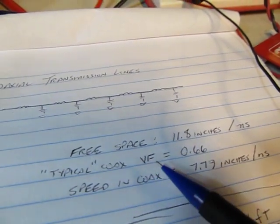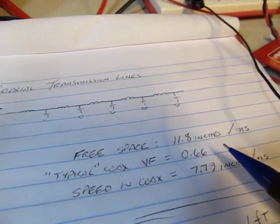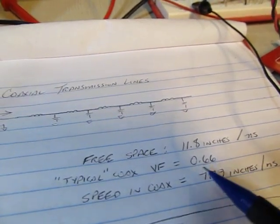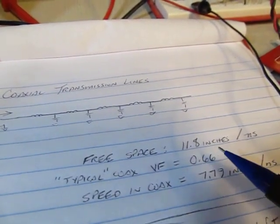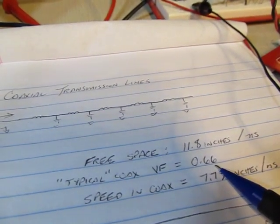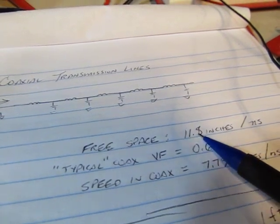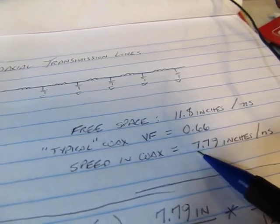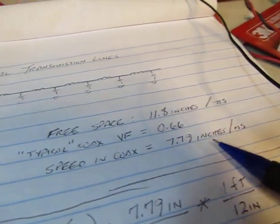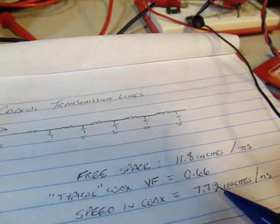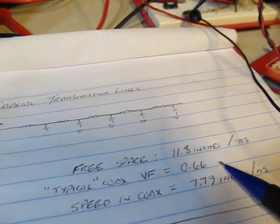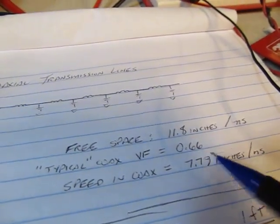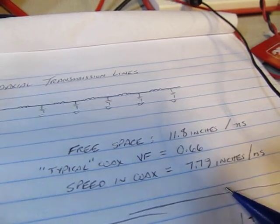Because the dielectric used in the cable is not free space, the speed of signals in wire is actually going to be a little bit slower. We use this factor called the velocity factor, which is essentially related to the dielectric constant. For typical coax, you're typically looking at about a 66% velocity factor, meaning that while in free space signals travel at 11.8 inches per nanosecond, in this typical coax it's more like 7.79 inches per nanosecond. Other coax types might vary from about 0.6 up to about 0.85.